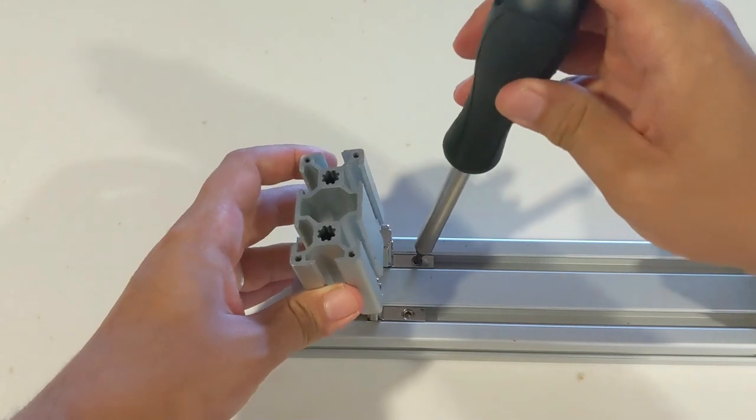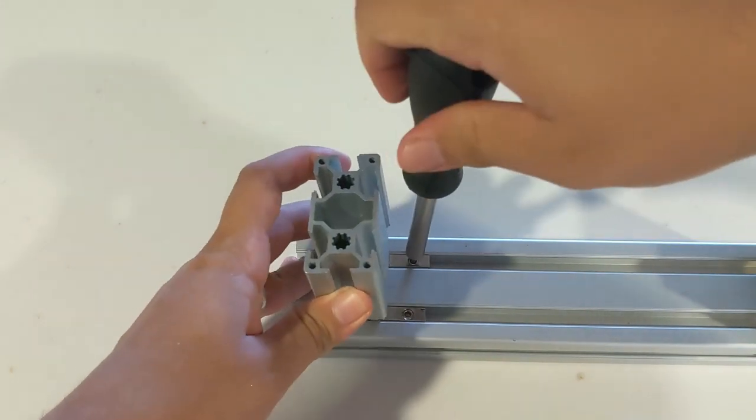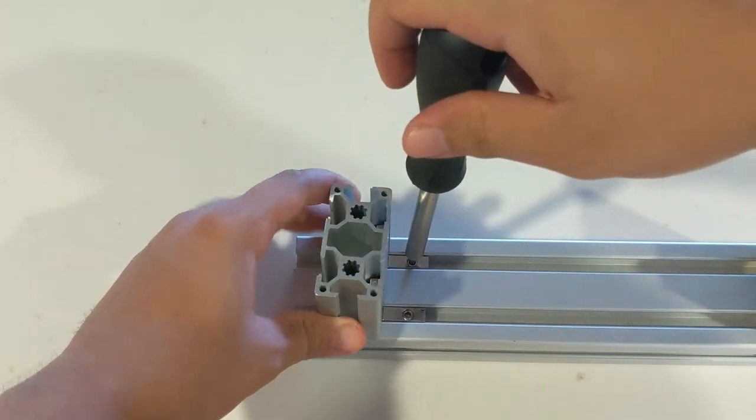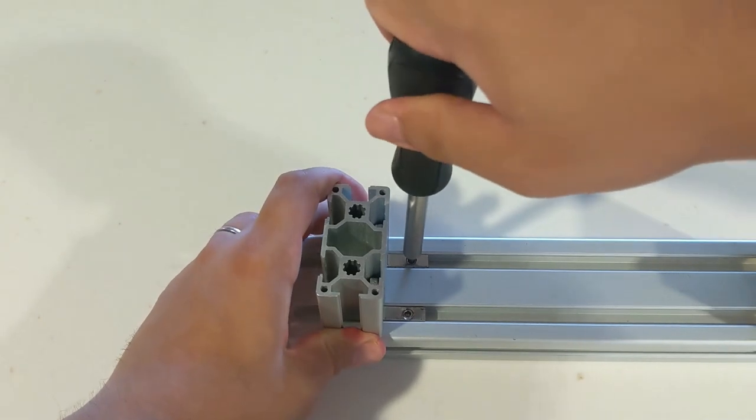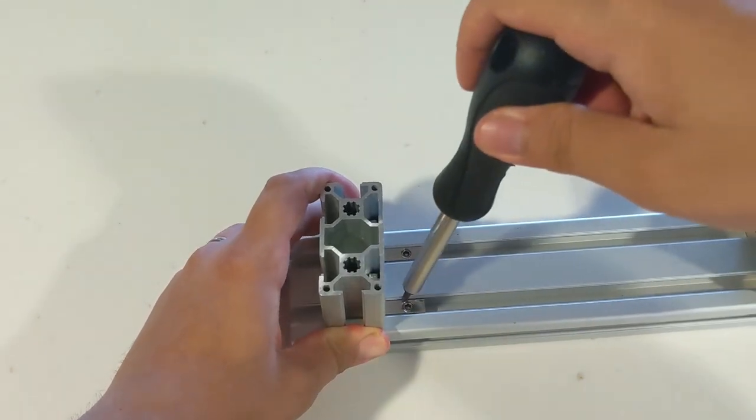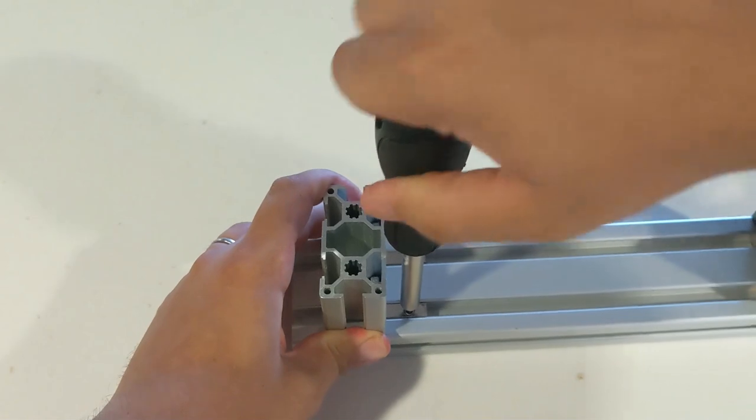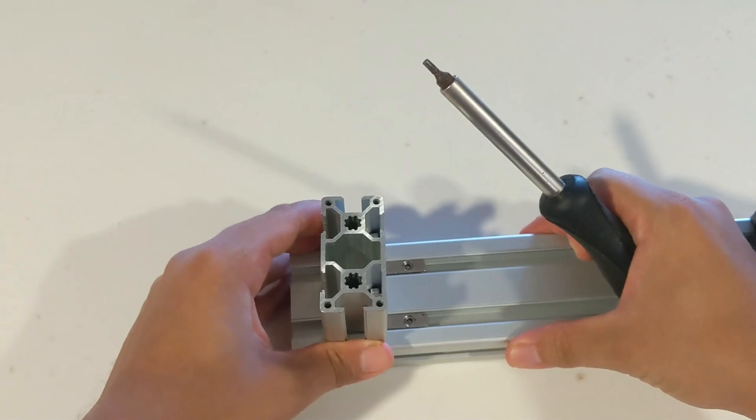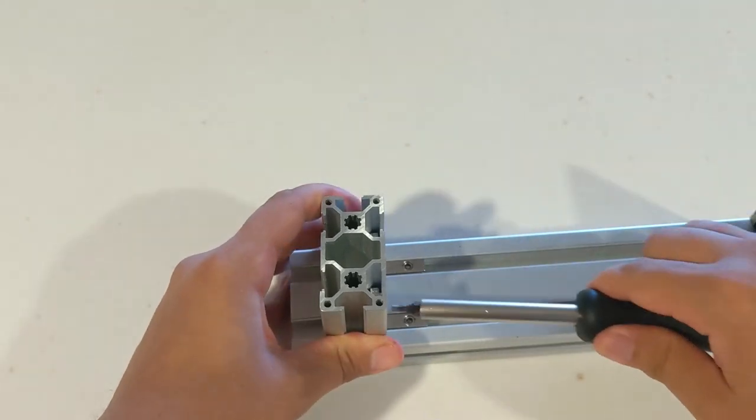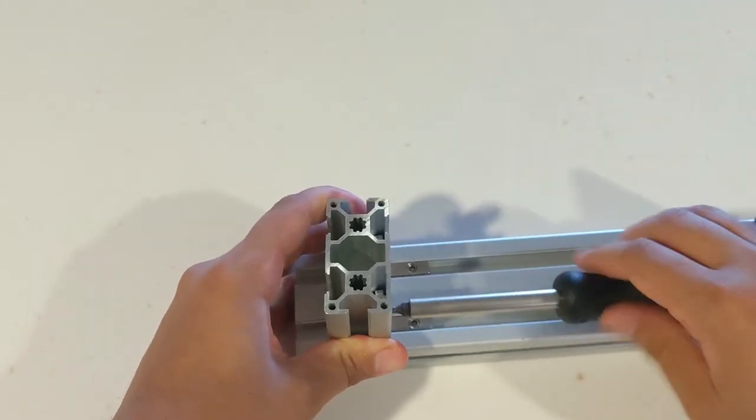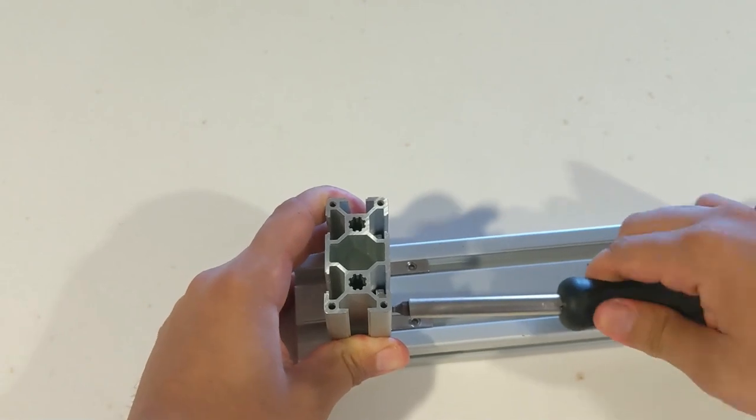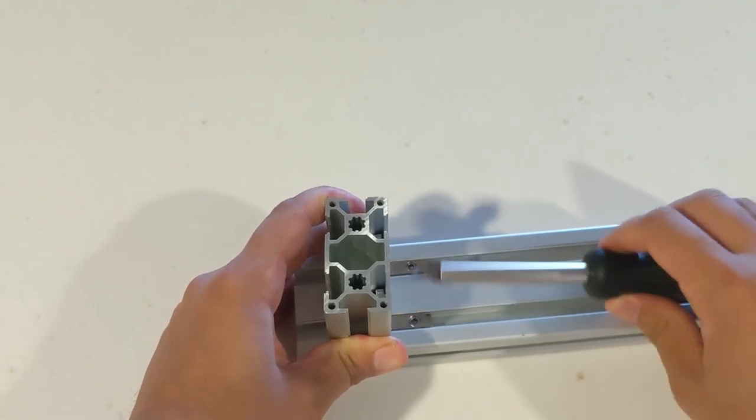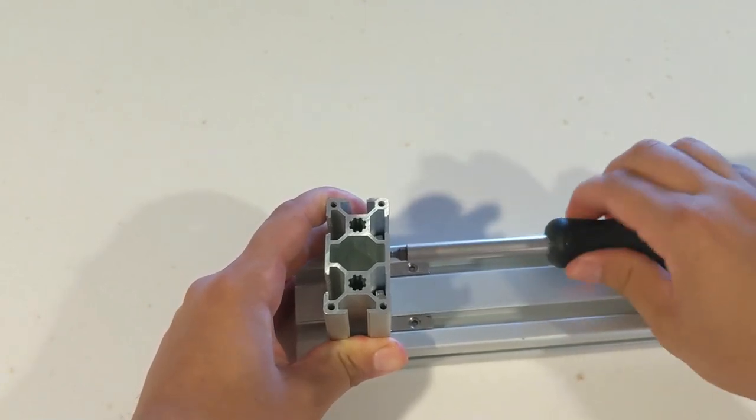We now take our smaller piece of profile and attach it to the 90 degree joint. You can see that I'm having to slightly loosen the 90 degree joints to fit the profile on there. Move it around a little so that the smaller piece of profile is sitting flush with the larger piece of profile and you can proceed to tighten those screws that are leading into the smaller piece of profile at this point.